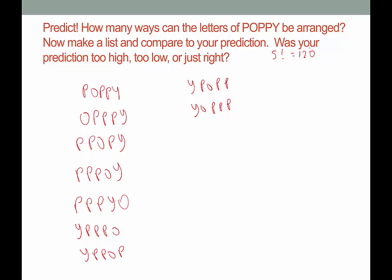Here's how we deal with the repetition. We know that the total, if they were all different letters, would be 120. So what we do is take the total possibilities if everything was unique, and then divide out the repetitions. There are three P's, so we divide out 3 factorial. There's one O, so divide 1 factorial, and one Y, so divide 1 factorial — though you don't need to include those since they're just 1. So it would be 5 times 4 and then stop at 3 factorial over 3 factorial, which gives us 20. There would be 20 unique arrangements of the letters POPPY.